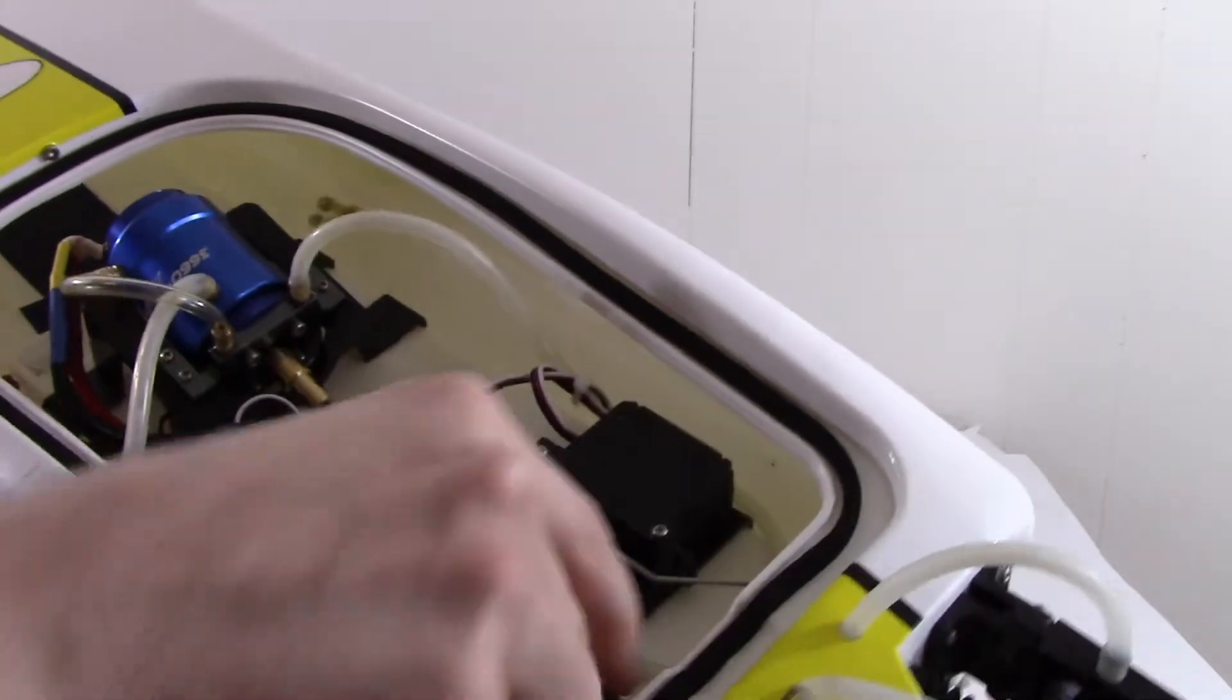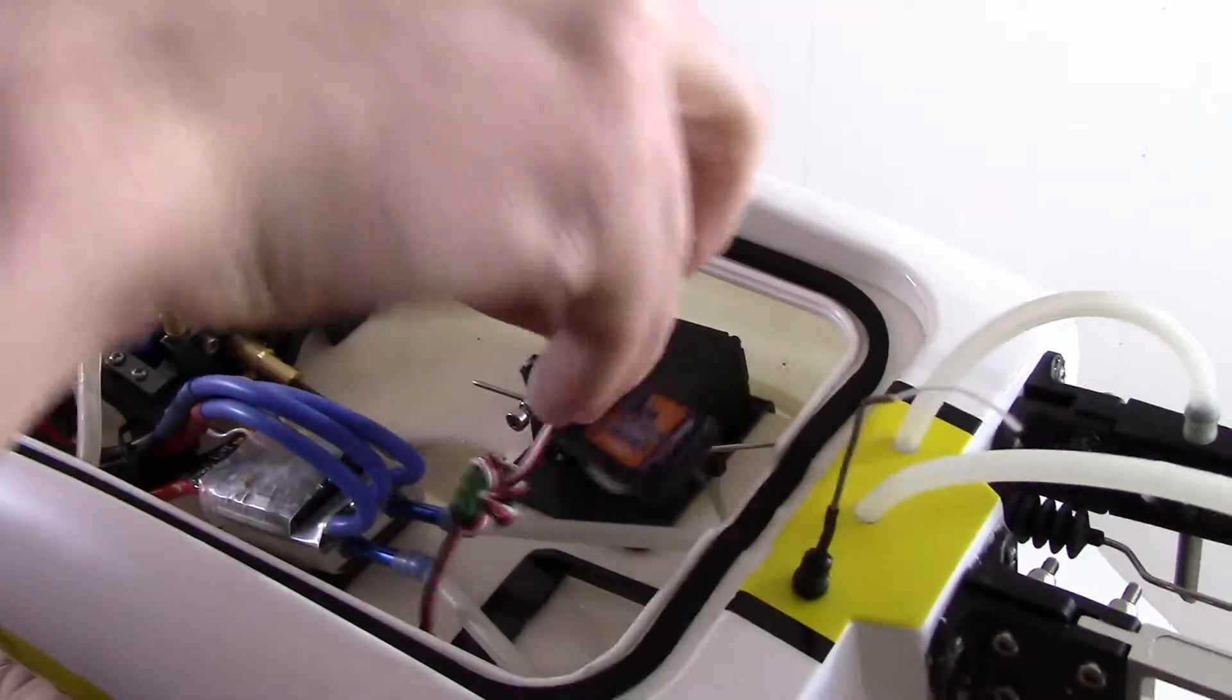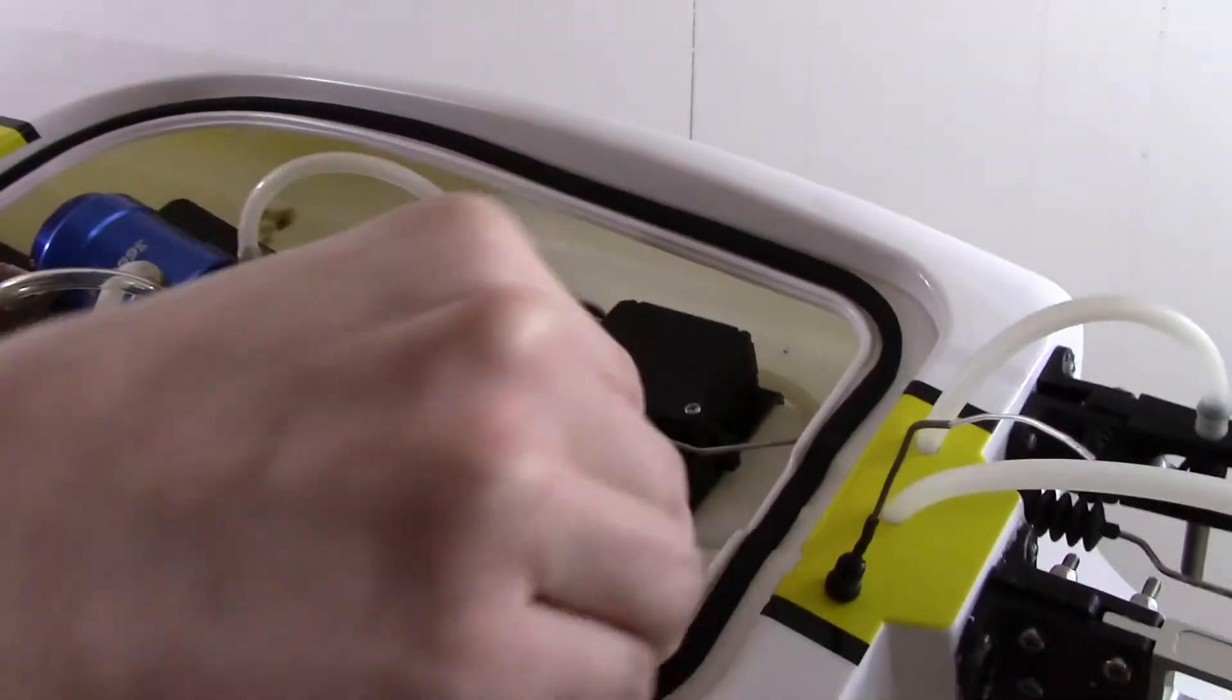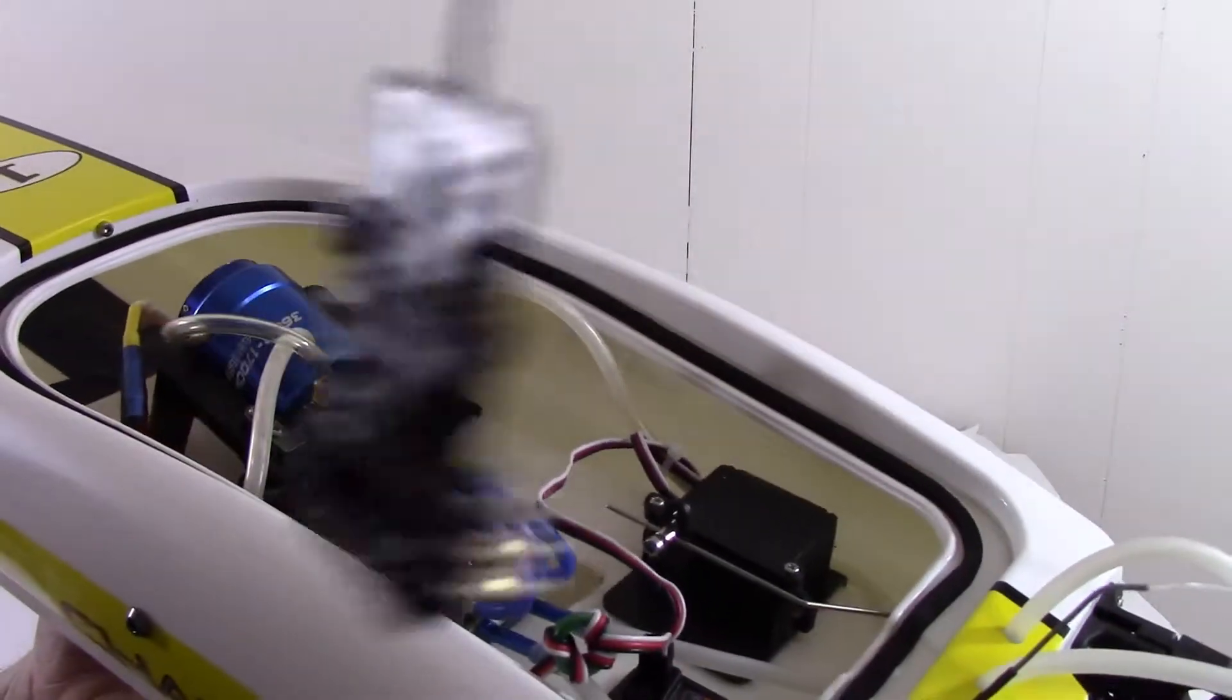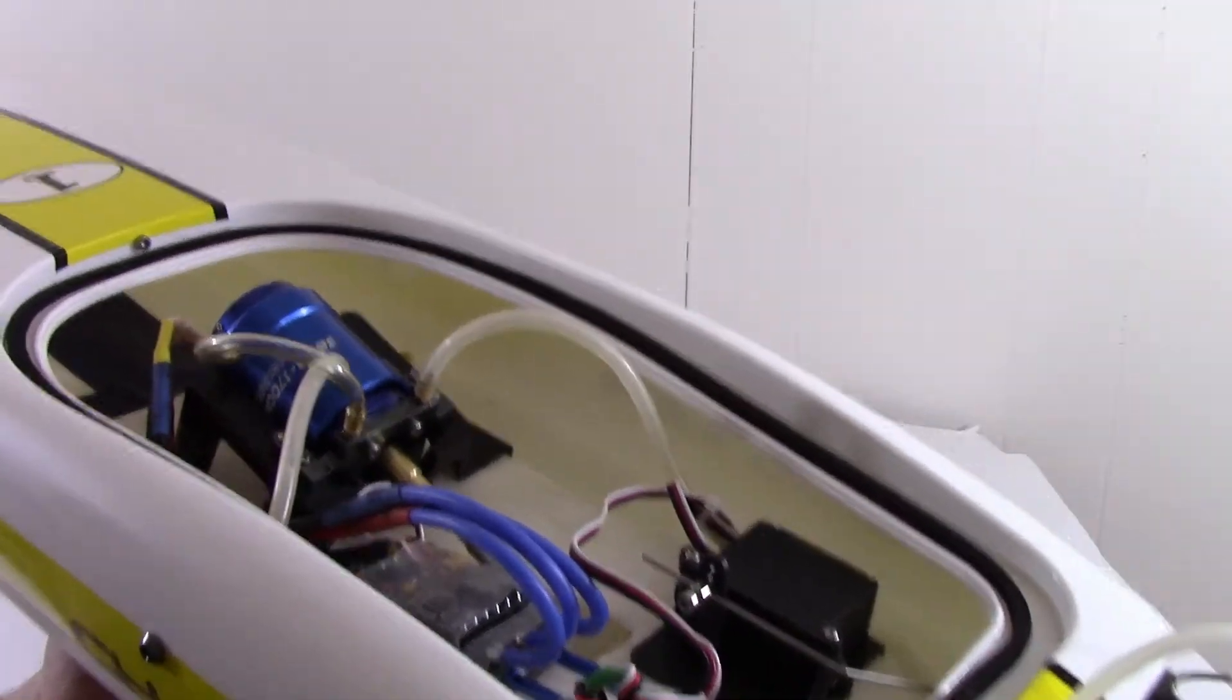I've just got my receiver on a piece of velcro so I can remove it as needed. It's been waterproofed. I waterproof all my receivers with liquid electrical tape. Works quite well.